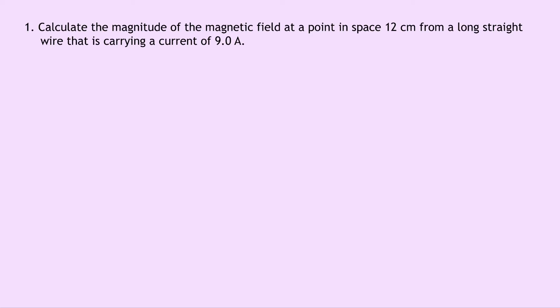Well writing down what we know from the question we're trying to calculate B, the magnetic induction. We know that μ₀ is 4π × 10⁻⁷ henrys per metre from the datasheet, I, the current, is 9.0 A, and the perpendicular distance r from the wire is 12 cm which is the same as 0.12 m.